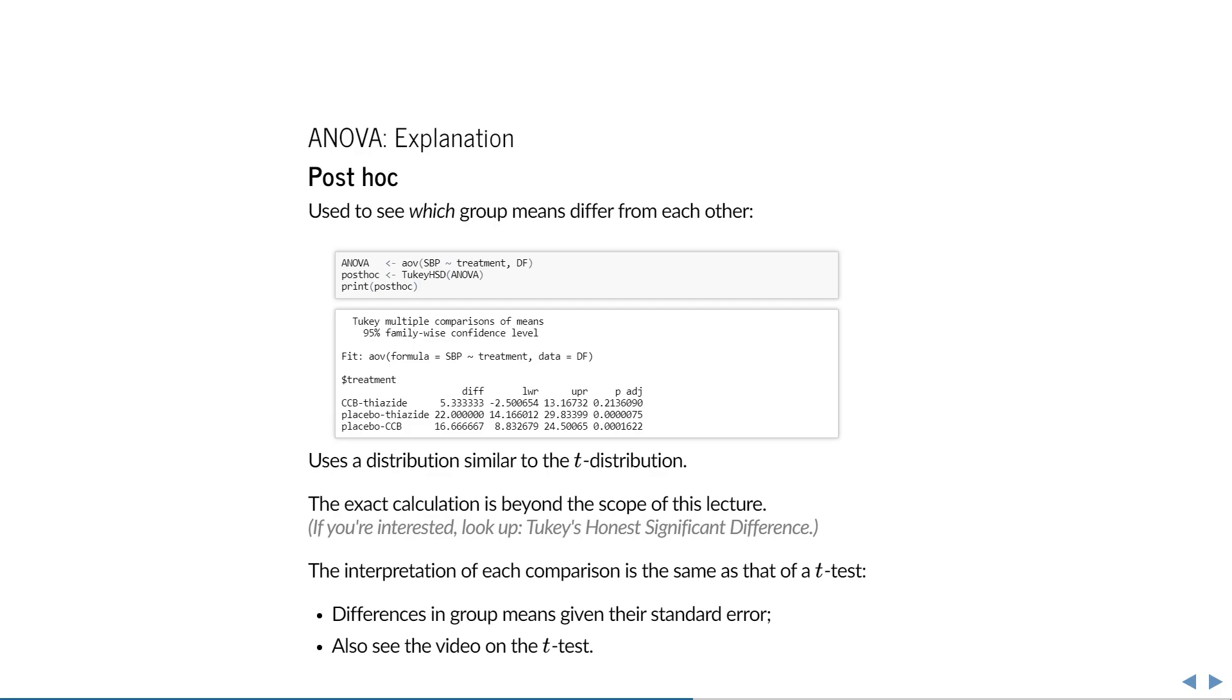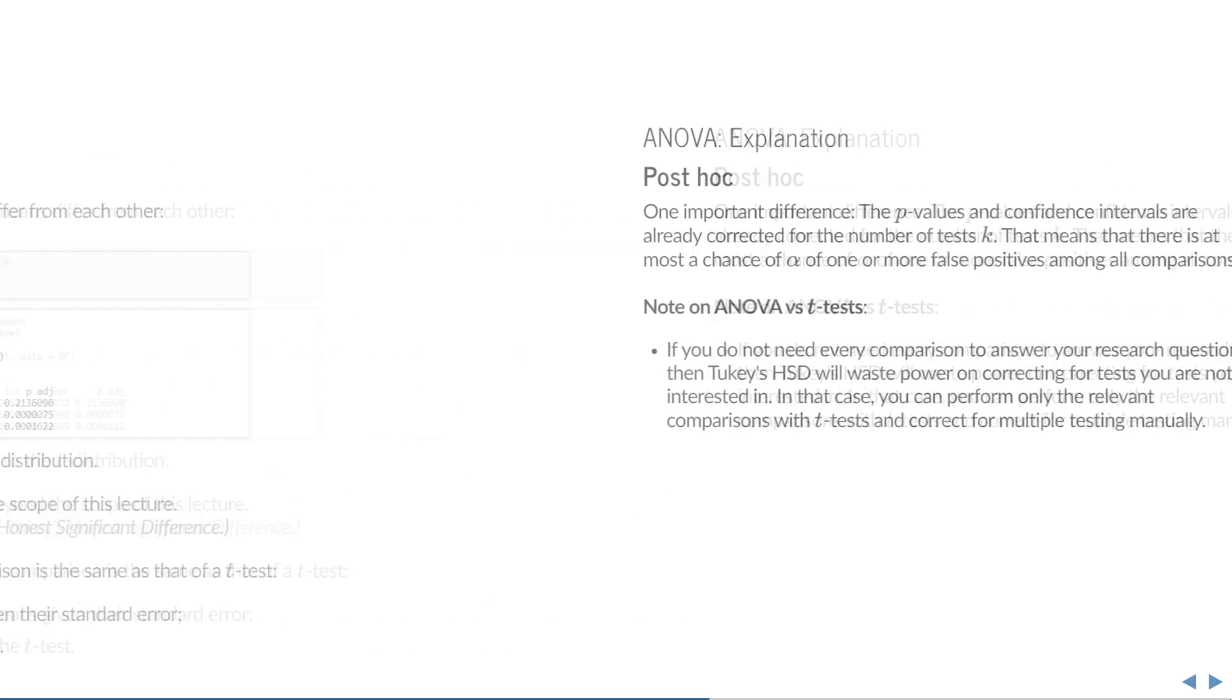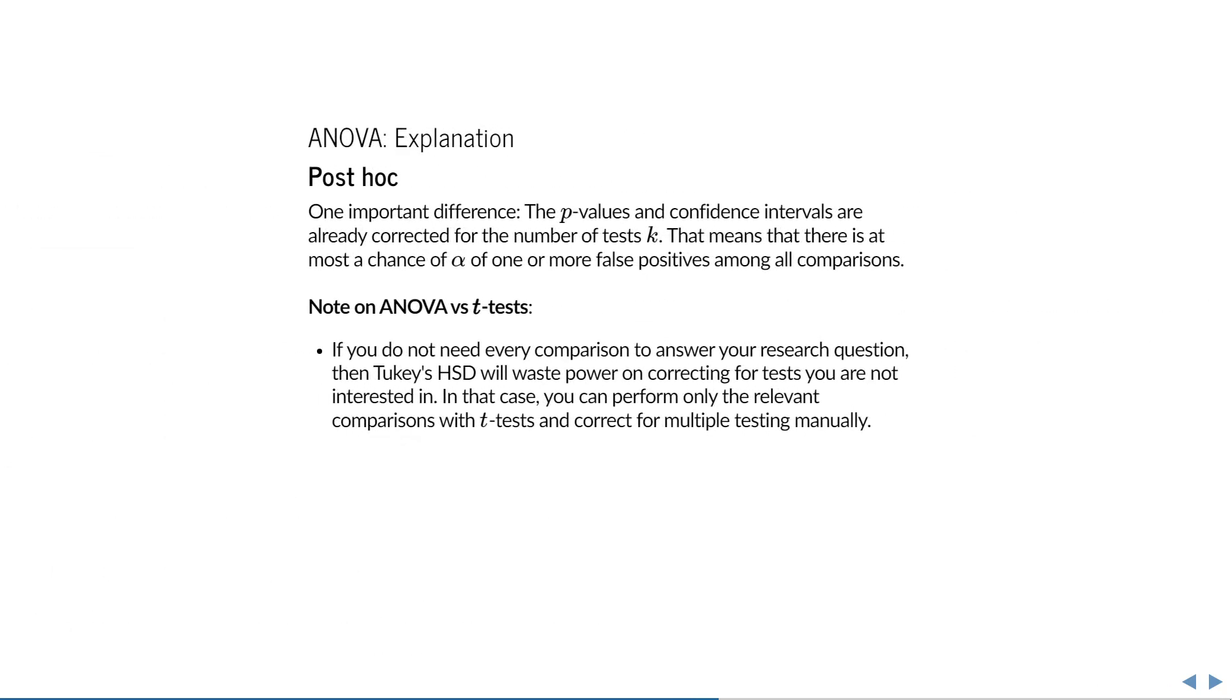If you haven't already, you can watch the video on the t-test and on multiple testing correction. This brings us to the most important difference between a series of t-tests and Tukey's honest significant difference. Namely, the p-values and confidence intervals have already been corrected for the number of tests k. That means that there is at most a chance of alpha of one or more false positives among all comparisons.